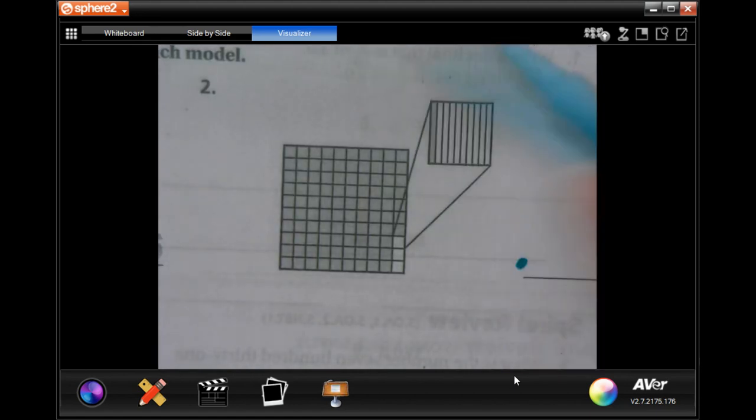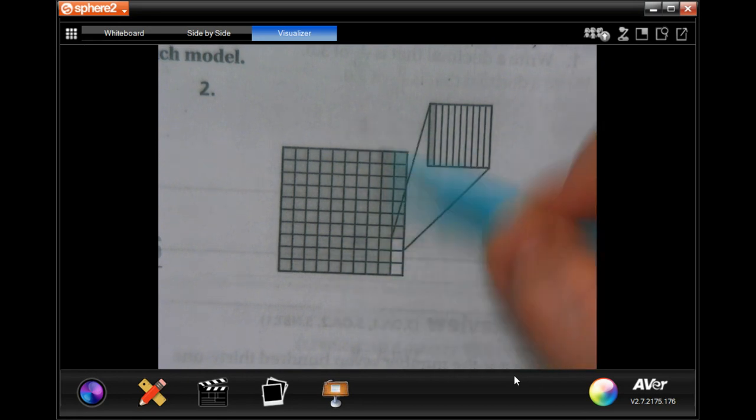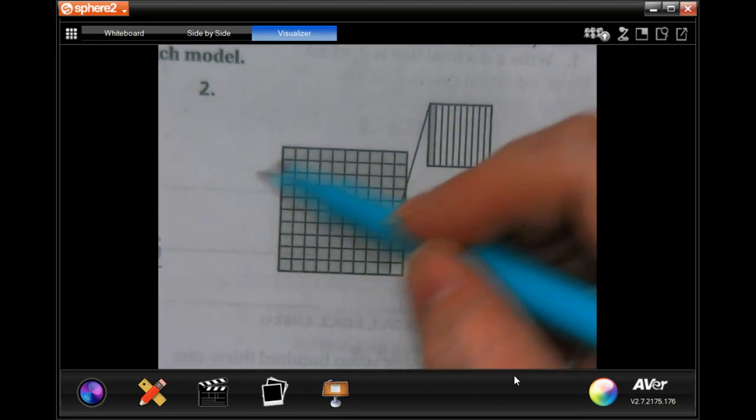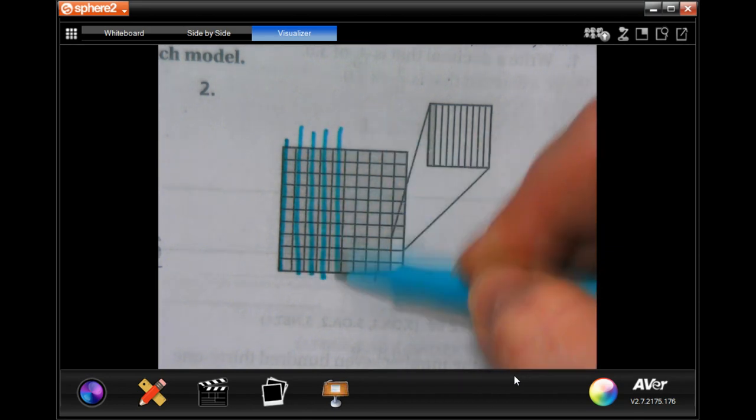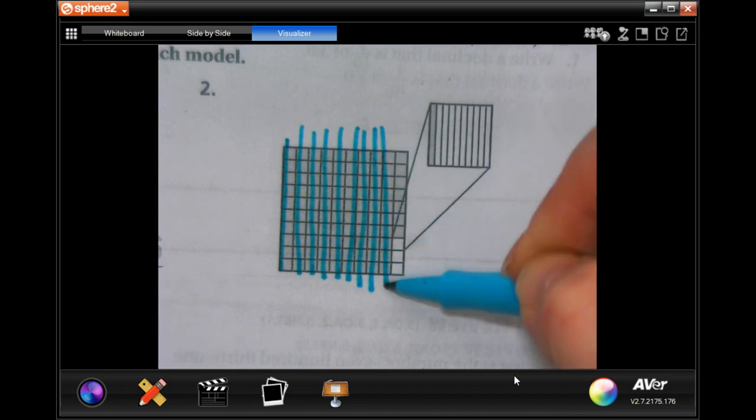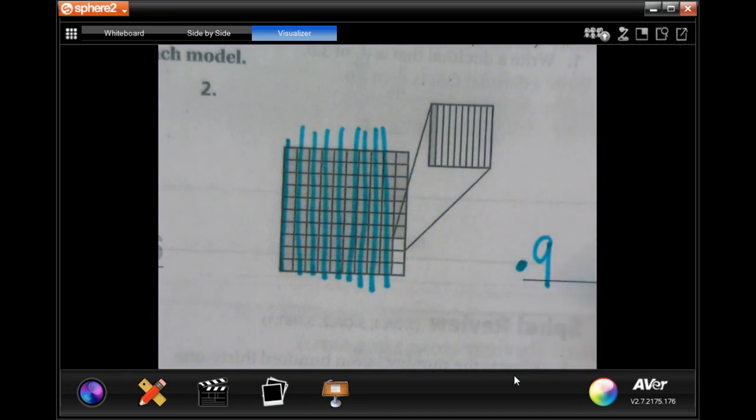So the first number is going to be how many of the whole rows here are filled in completely: one, two, three, four, five, six, seven, eight, nine are filled in completely - that's your first number.